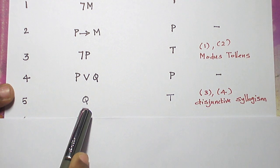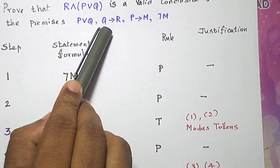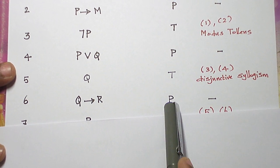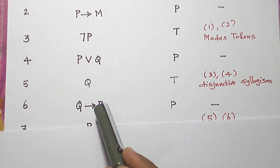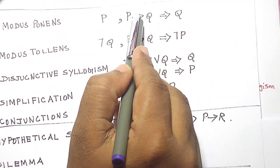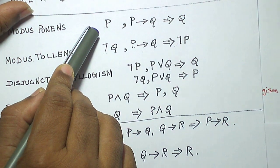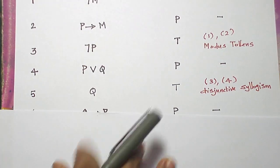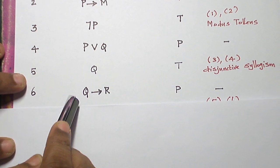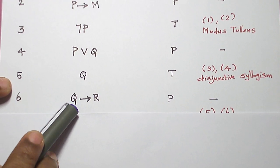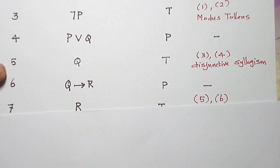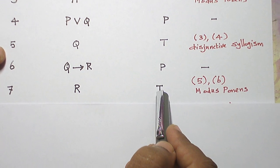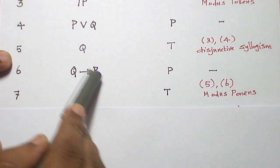Now I ended up with Q, so let me introduce a premise that contains Q. Q conditional R is the next premise, introduced using rule P with no justification required. Combining these two formulas: Q conditional R has a conditional connective, and we have the left-hand side Q as an extra formula, so we apply modus ponens. The right-hand side R becomes the derivation, using rule T by combining steps five and six with modus ponens.